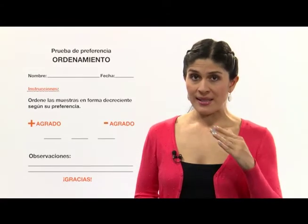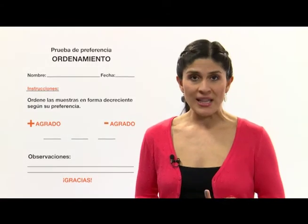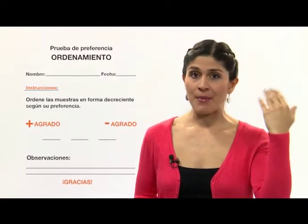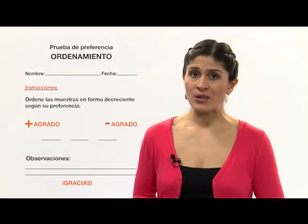En la prueba de ordenamiento, los jueces ordenan las muestras que se les presentan según su nivel de preferencia. Esto significa que deben ordenarlas desde la que más les gusta hasta la que menos les gusta. En este tipo de pruebas se pueden valorar hasta cinco muestras distintas. ¿Qué elementos son necesarios para desarrollar la prueba? ¿Qué pasos hay que seguir para realizarla? Veamos a continuación cómo se hace la prueba en un laboratorio de análisis sensorial.